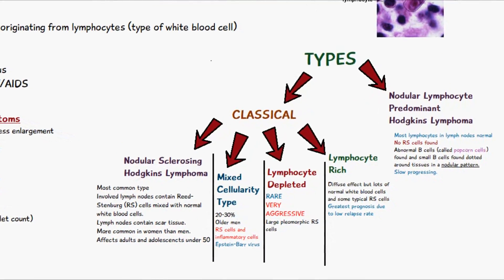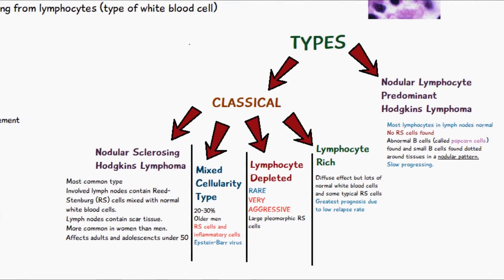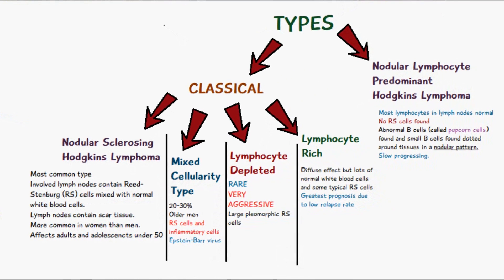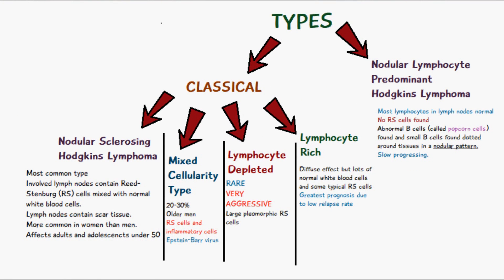There are two groups of Hodgkin's lymphoma: the classical type and the nodular lymphocyte predominant Hodgkin's lymphoma. Within the classical group there are four types: nodular sclerosing, mixed cellularity, lymphocyte depleted, and lymphocyte rich. Nodular sclerosing Hodgkin's lymphoma is the most common type. It involves lymph nodes containing Reed-Sternberg cells, which are a typical diagnostic tool for Hodgkin's lymphoma — you can see a diagram of what a Reed-Sternberg cell looks like here. The lymph nodes contain these Reed-Sternberg cells mixed with normal white blood cells, as well as scar tissue, which is why it has the name sclerosing.